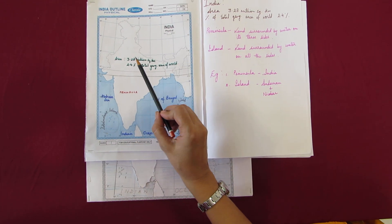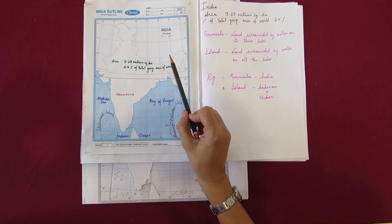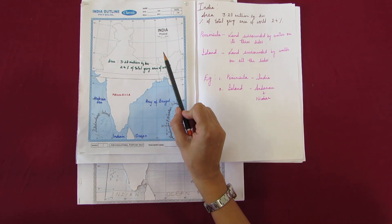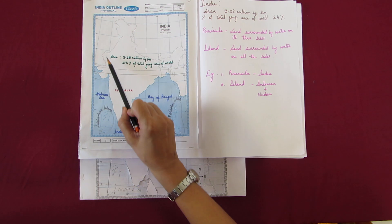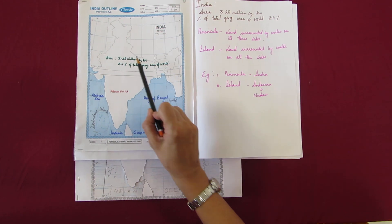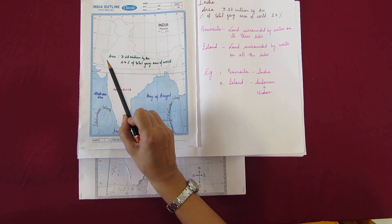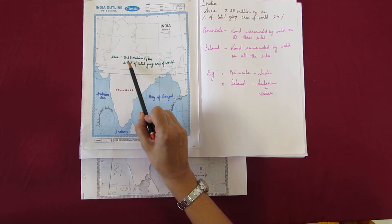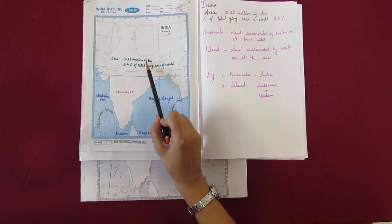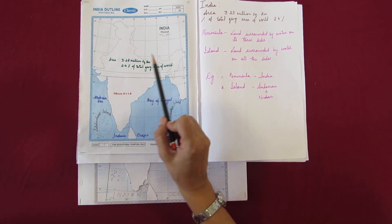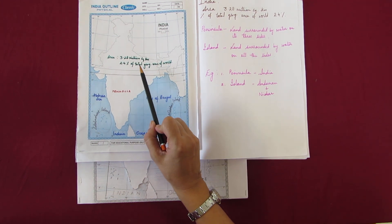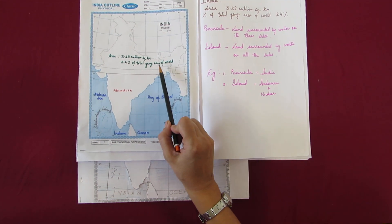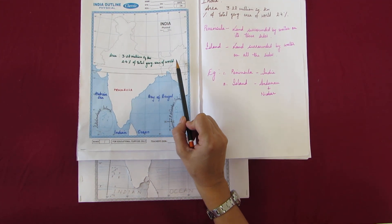Our topic is 9th Standard Geography Lesson 1: India's Size. India is such a huge, vast country that its area is 3.28 million square kilometers, which accounts for 2.5% of the total geographical area of the world.